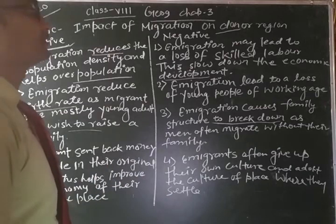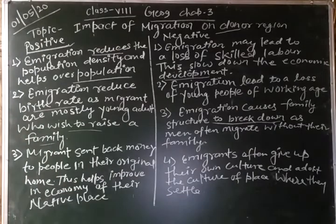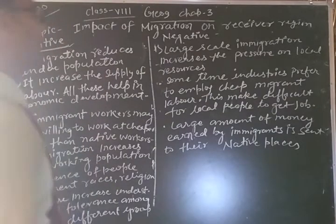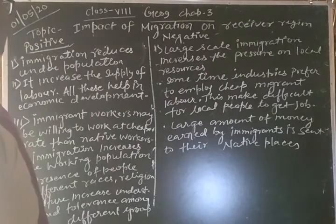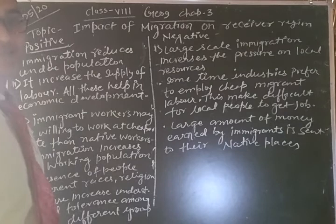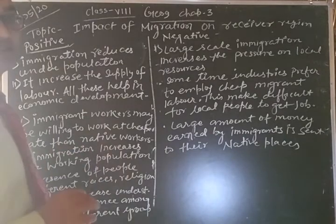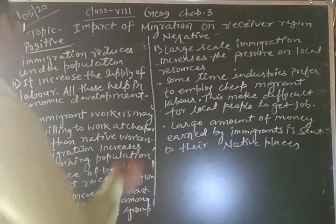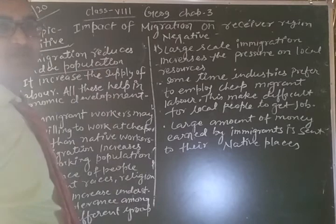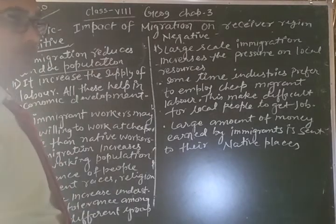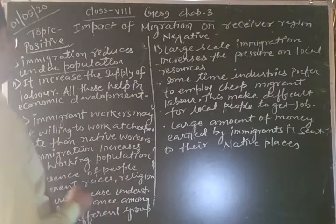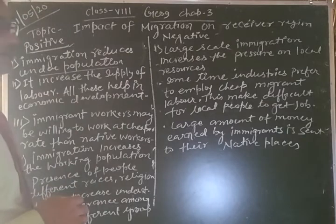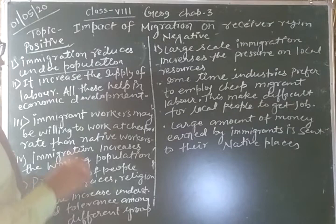Now the next topic is the impact of migration on the receiver region. Immigration reduces under-population — immigrants increase the population of the receiver region and reduce under-population. It also increases the supply of labor, which helps the economic development of the country.